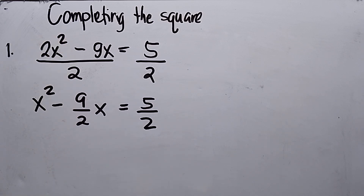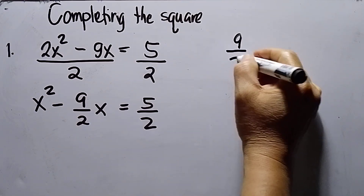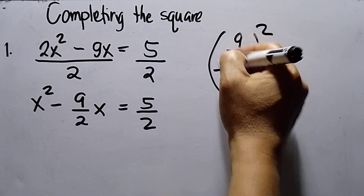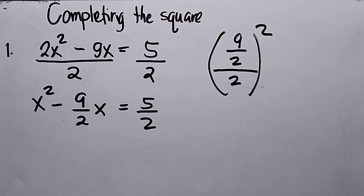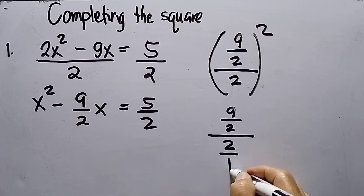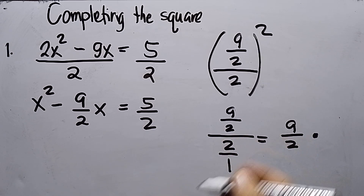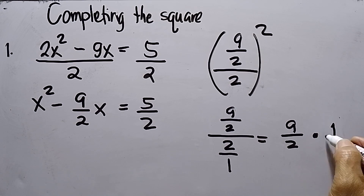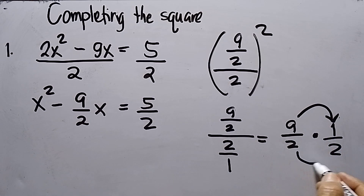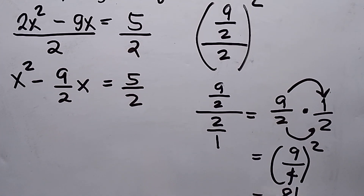Then the rule for completing the square: I need to take 9 over 2, divide by 2, and then square it. So 9 over 2 divided by 2 — I need to simplify inside the round bracket. This will be 9 over 2 over 2 over 1, which becomes 9 over 2 times the reciprocal of 2 over 1. So this will be 9 over 4, and then squared, which gives 81 over 16.